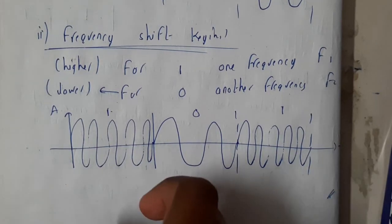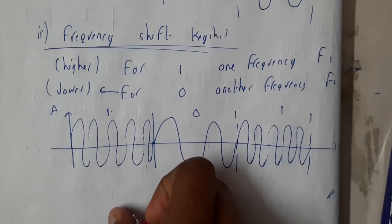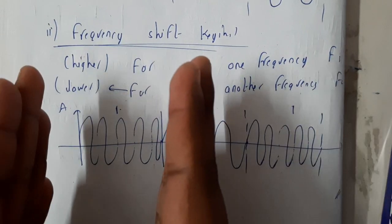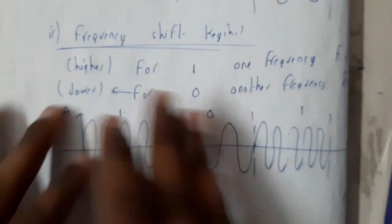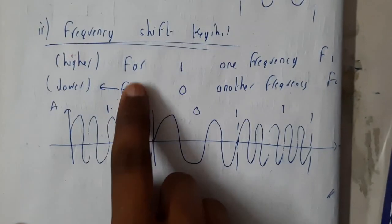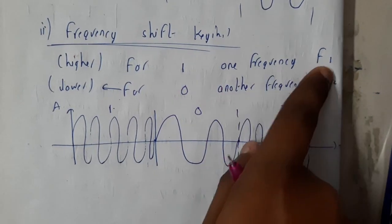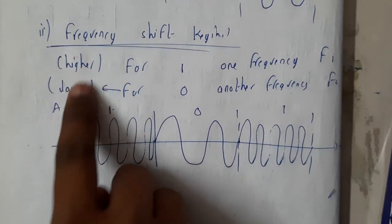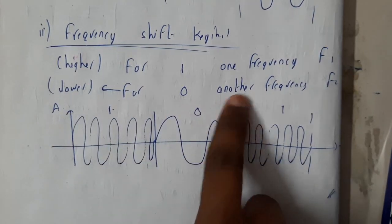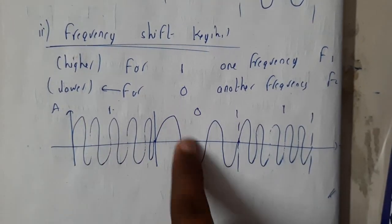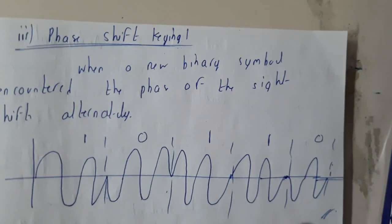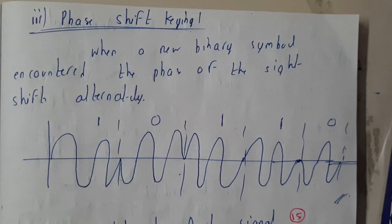Similarly, Frequency Shift Keying (FSK): when amplitude is high, the frequency will be really high, so in a short area there could be many cycles. For frequency f1 representing zero, we will have high frequency. For another frequency f2, if it is low, we will have only a few cycles. This is representation with respect to frequency.